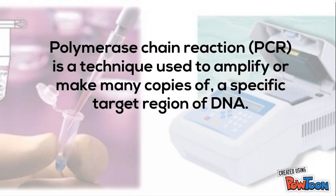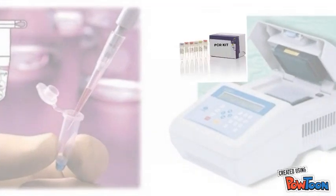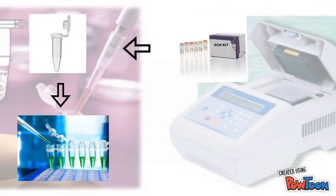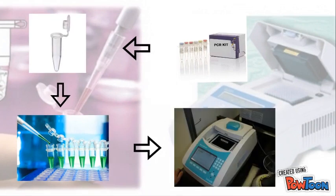Polymerase chain reaction is a technique used to amplify or make many copies of a specific target region of DNA. The test is done by mixing all the specified components from the commercially available kits into a micro-tube, and then the micro-tube will be placed in a machine for testing. Performing these tests normally takes time.